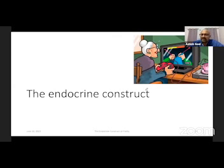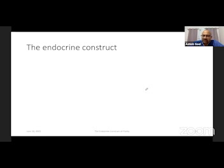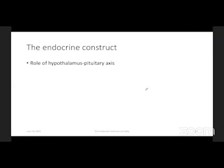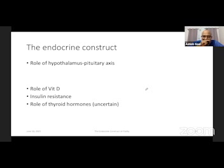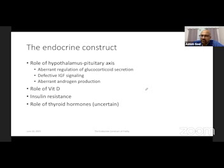With this, I move on to the endocrine construct of frailty. There are a few key factors which play an important role in the development of frailty: the hypothalamus-pituitary axis, the role of vitamin D, insulin resistance, and the unclear role of thyroid hormones. As regards the hypothalamus-pituitary axis, there is aberrant regulation of glucocorticoid secretion, defective insulin-like growth factor signaling, and aberrant androgen production.